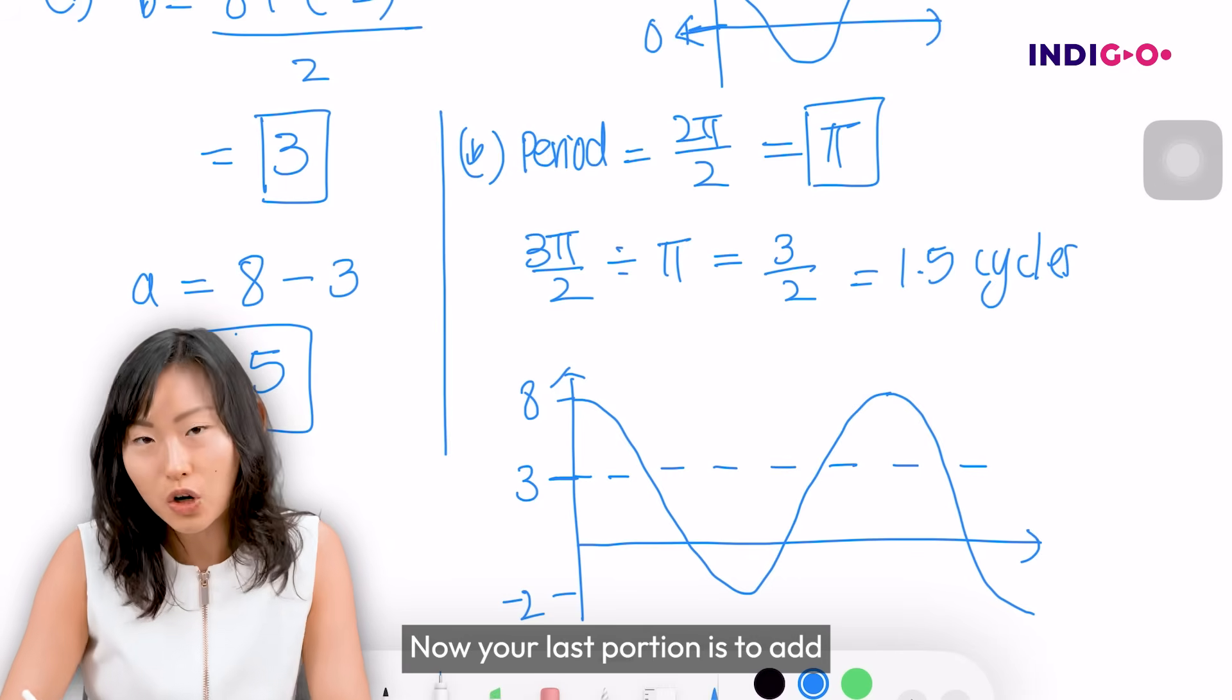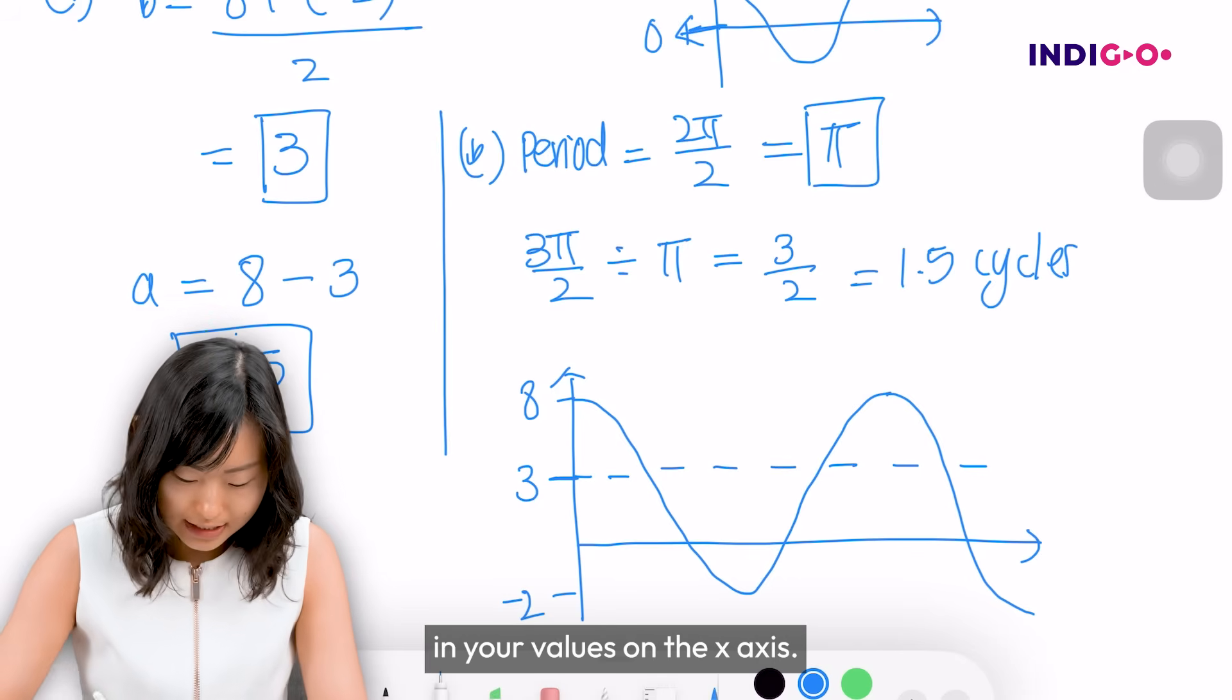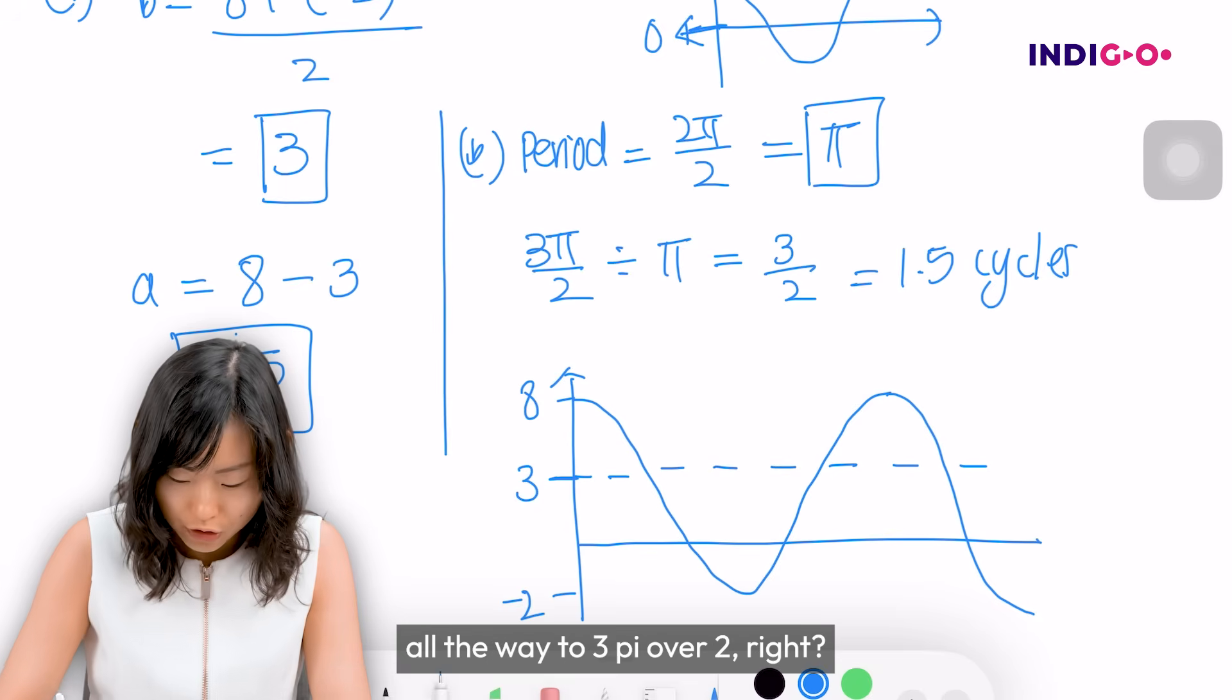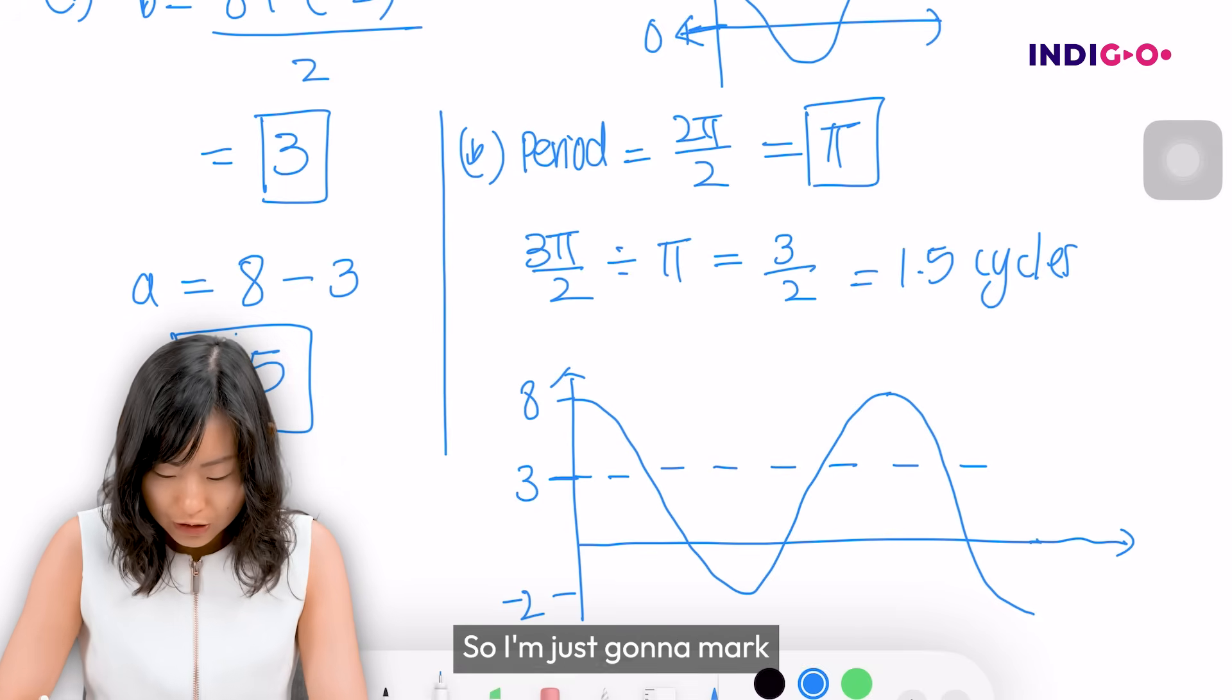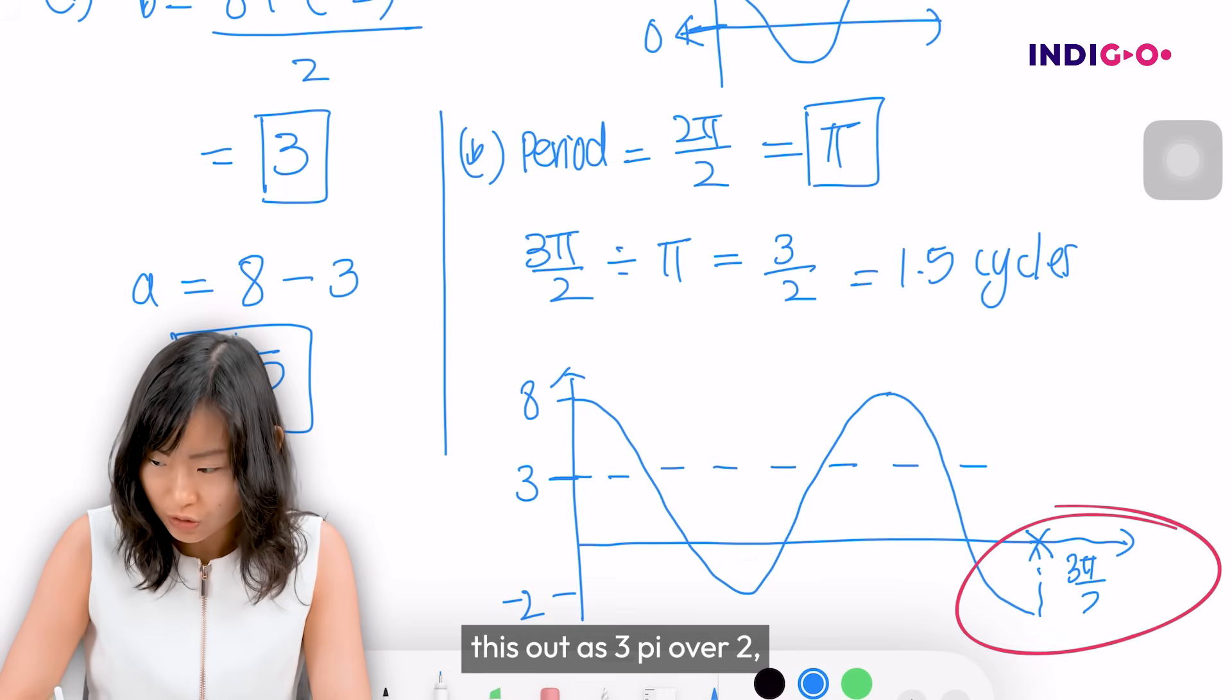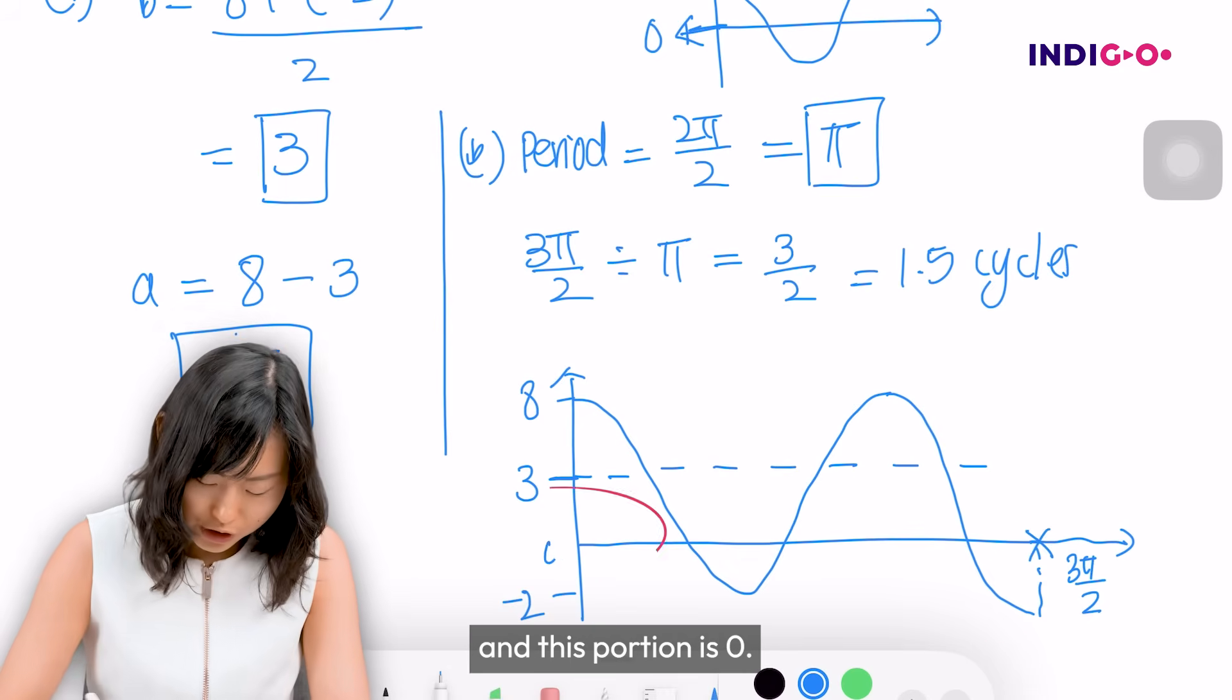Now your last portion is to add in your values on the x-axis. We know that we are meant to draw from 0 all the way to 3π/2, right? So I'm just going to mark this out as 3π/2. And this portion is 0.